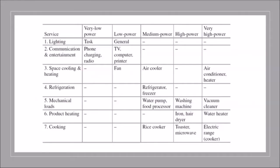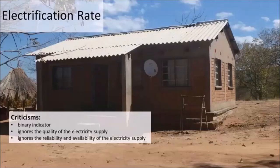Looking at it another way, you have different services — from lighting to cell phones to radios to even refrigerators — and you map a solution based upon the services you want to provide. Things like lighting, communication, and entertainment can be powered with low-power or very low-power systems, but things like washing machines and water heaters are high power and would probably never be supplied by a solar home system — you would need a mini grid for that type of service.